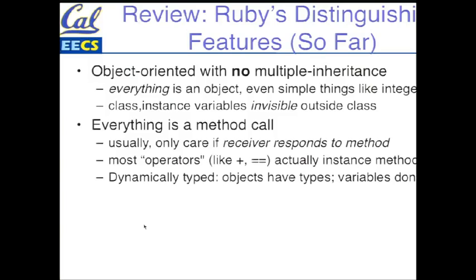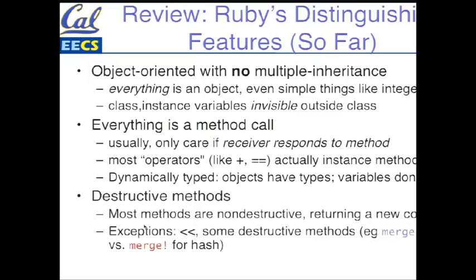Everything is a method call. And as we'll see, over and over again, I'm going to hammer this. You only care if the receiver responds to the method. This is very different from asking, is the receiver the right class or the right subclass. Most of the time, that is irrelevant. The only question is whether it responds to the method, and we're going to use that to do some really nice programming. Most things that look like operators aren't. They're actually instance methods, and they may be defined different ways in different classes. Objects do have types, but the variables that refer to them don't have types. And although the vast majority of methods are not destructive, there are a few that are. Double less than is one example. And there's a few where there's a destructive variant that ends in an exclamation mark. The exclamation mark is a way of warning you that this might be a dangerous method.